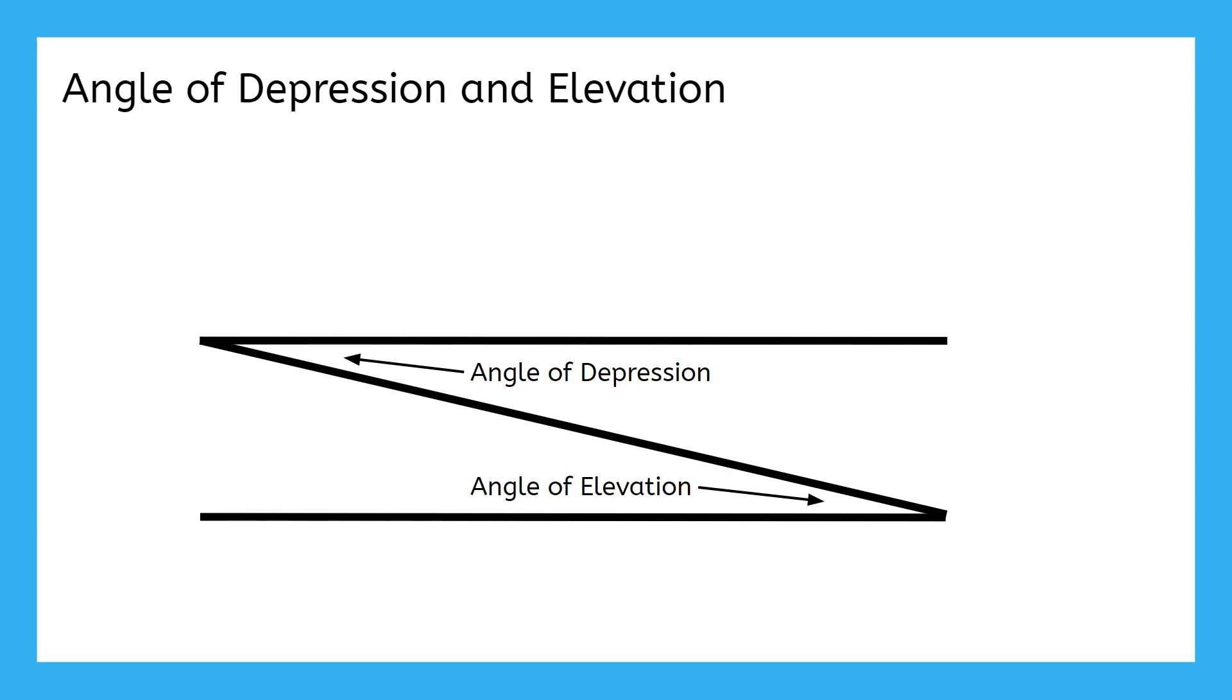We determined earlier that we have two horizontal lines, and since they have the same slope, they're parallel to each other. And with this line of sight acting as the transversal, what kind of angle pair are the angles of elevation and depression?